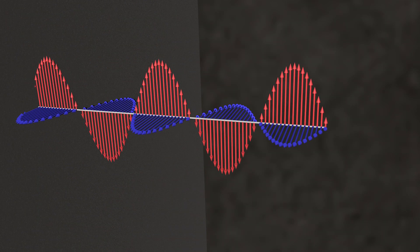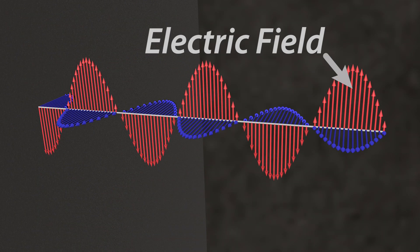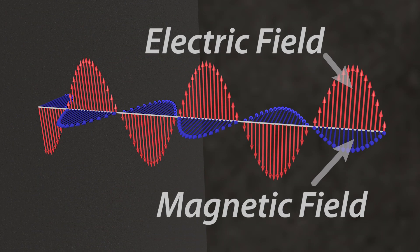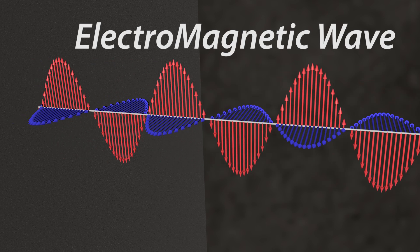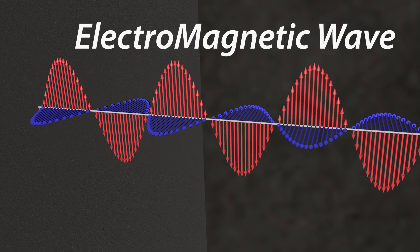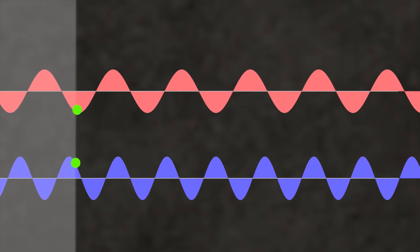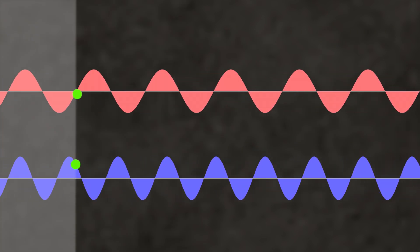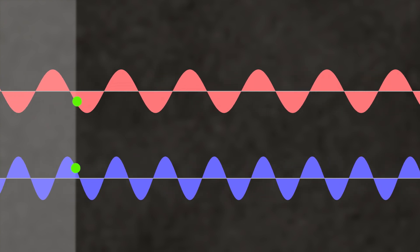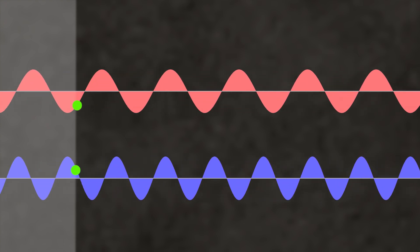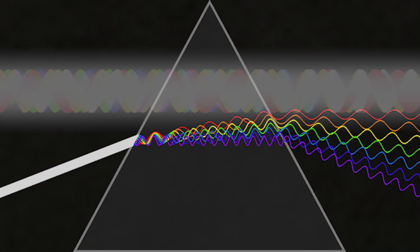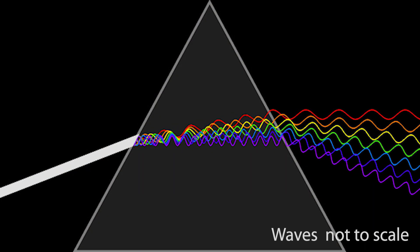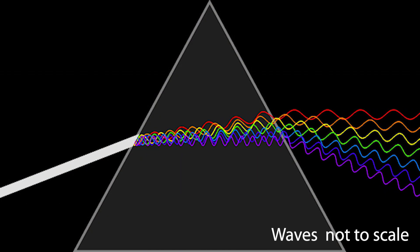To know that, we should first understand what sunlight is made up of. Sunlight is called an electromagnetic wave. Is it a single wave? No — it consists of multiple waves which have different rates and lengths of oscillation. The combination of these waves is what we see as white light. If we split them, we will see waves of different colors.